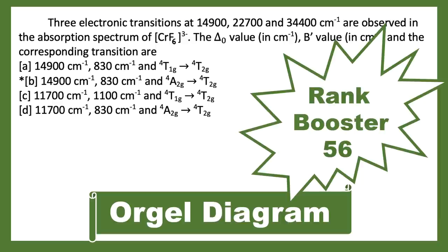Hi everyone, this is our rank booster number 56. This question is from the Orgel diagram — we have released two or three values and will clear all the concepts here. Question one: read three electronic transitions and their wave numbers are given. The complex is CrF6³⁻. We will start with the delta naught value, B' value, and the corresponding transitions.